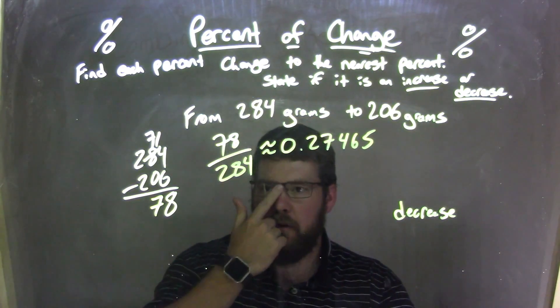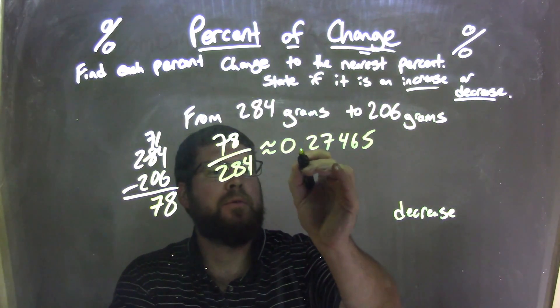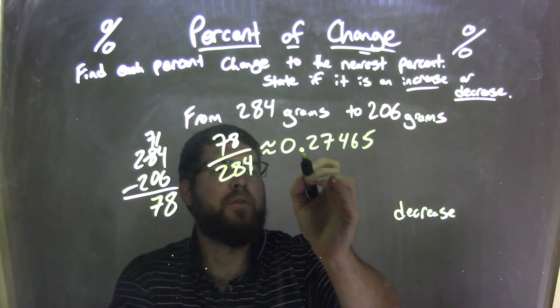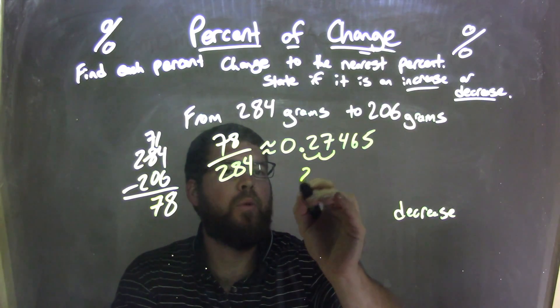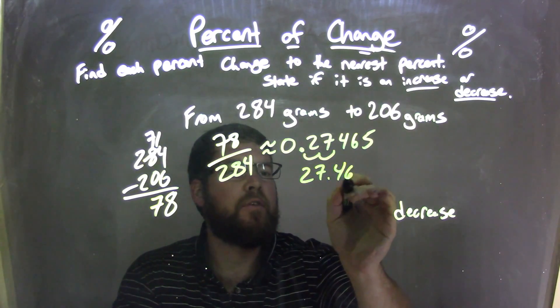Well, to move that or convert that to be a percent from a decimal, we move that decimal over two units, and we get a 27.465%.